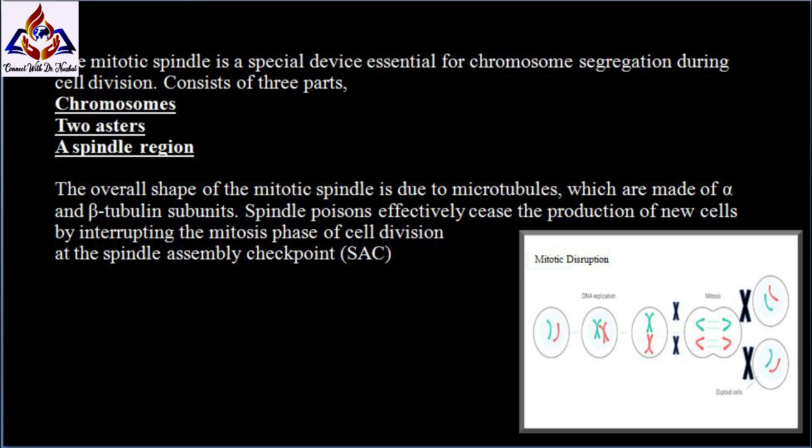Cells have developed various checkpoints to carry out mitosis with great accuracy. Early research concluded that spindle poison introduced to cells caused a considerable reduction in the number of cells that exited mitosis, while the number of cells that entered mitosis dramatically increased.